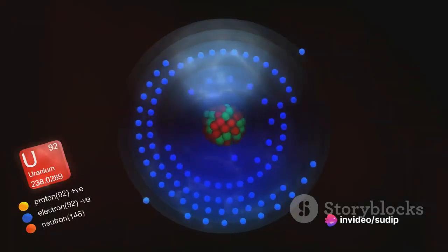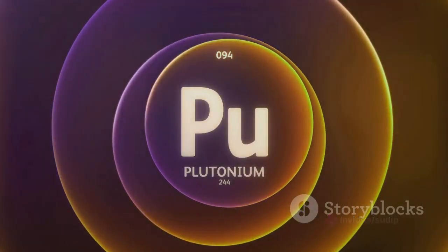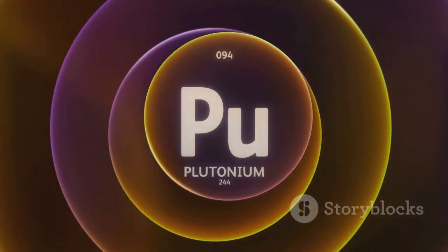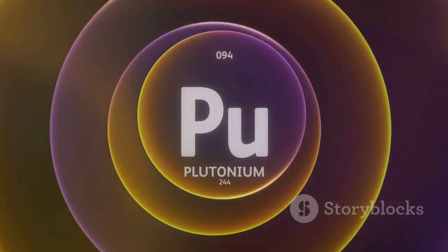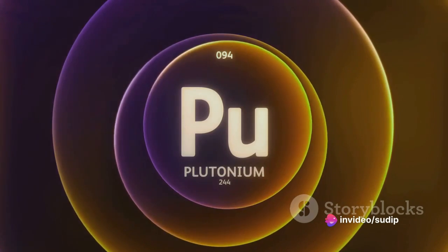Now you may wonder, does this variation in neutron count affect the properties of the element? The answer is yes and no. Isotopes of an element share similar chemical properties because these are primarily determined by the number of protons or the atomic number.